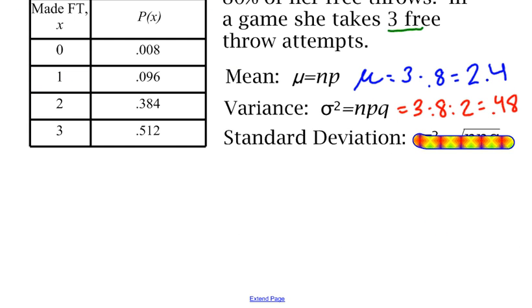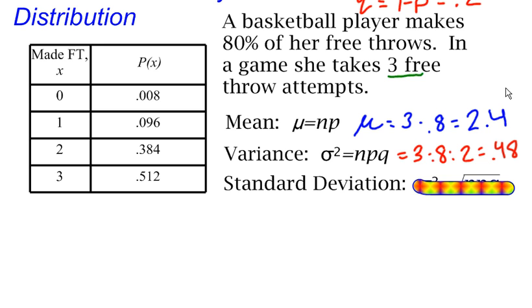I've got one more thing that I want to look at, and that's the standard deviation. Well, standard deviation is just the square root of the variance, and this little squared should not be there. The symbol for standard deviation is just sigma. So this should be sigma equals the square root of n times p times q.